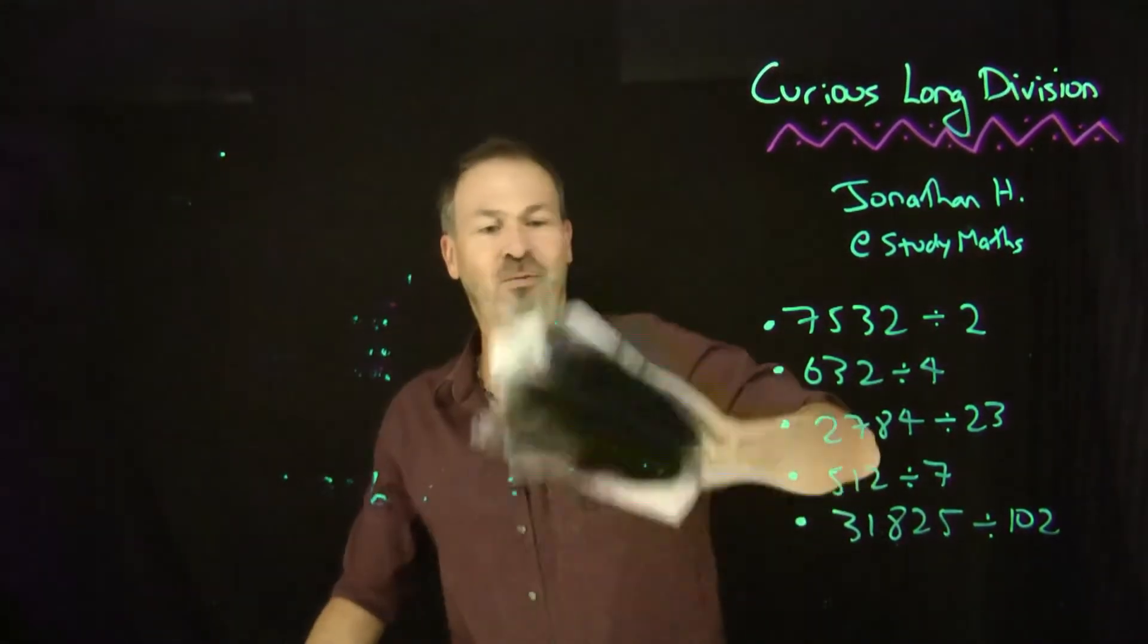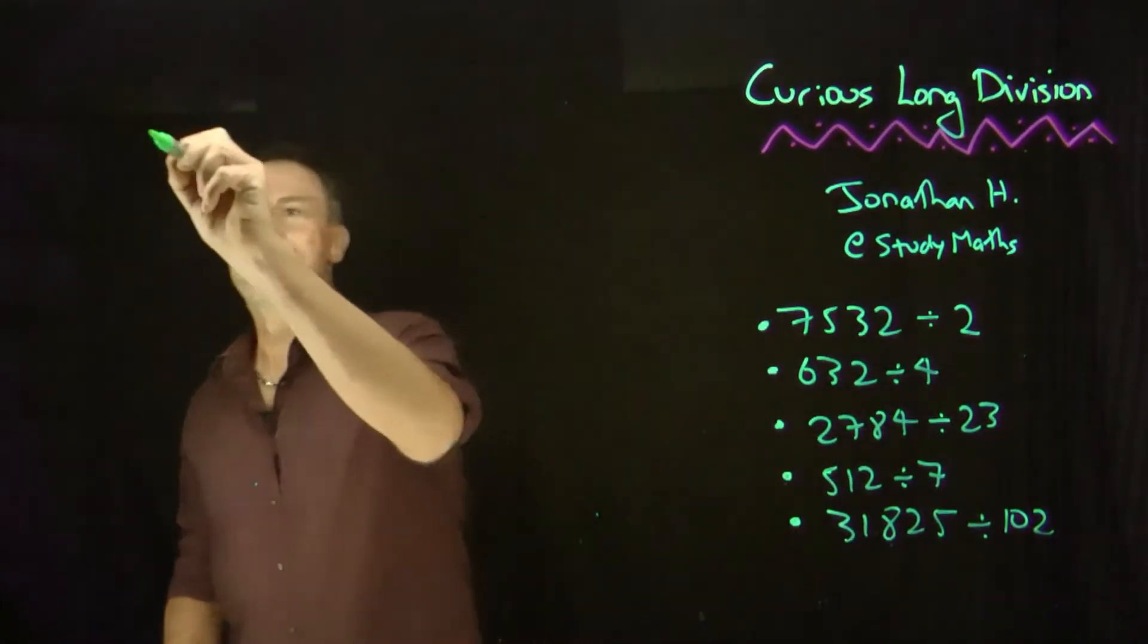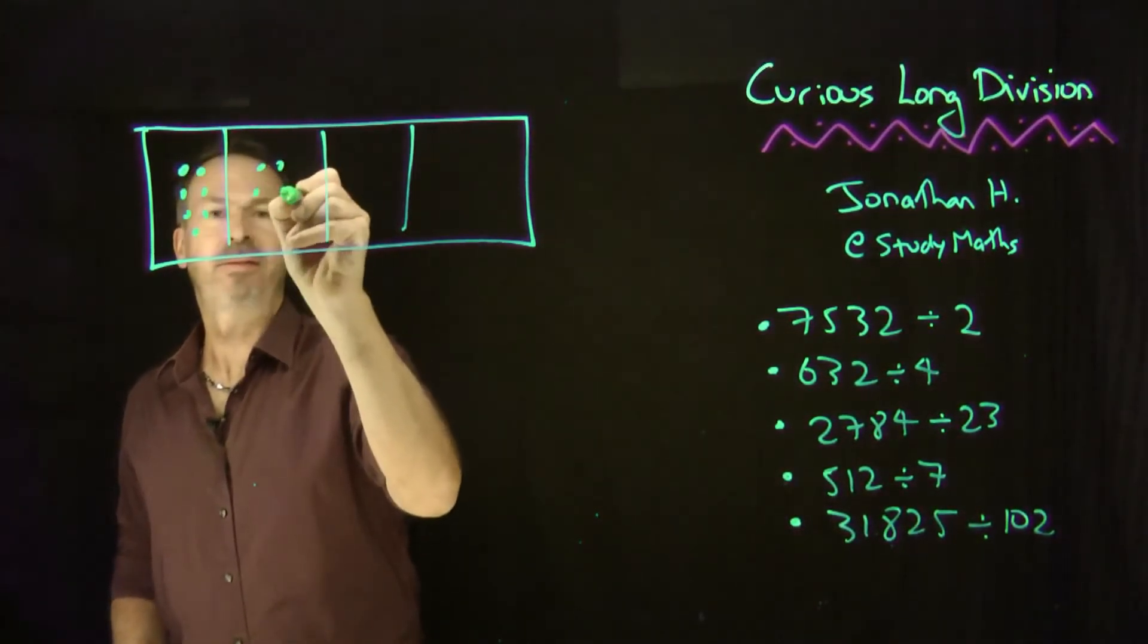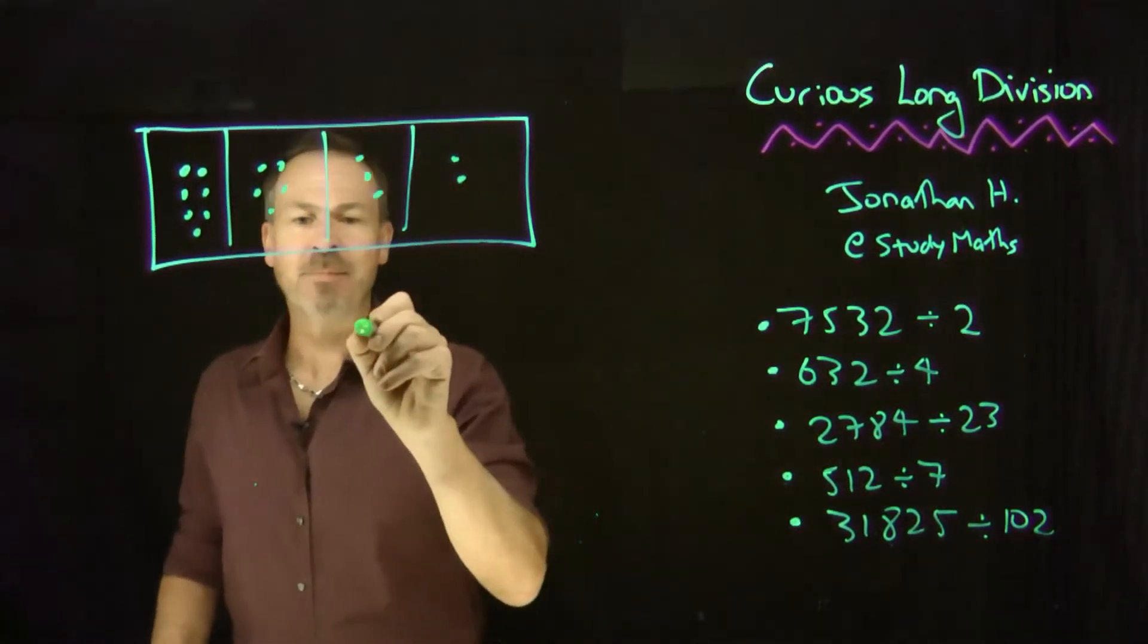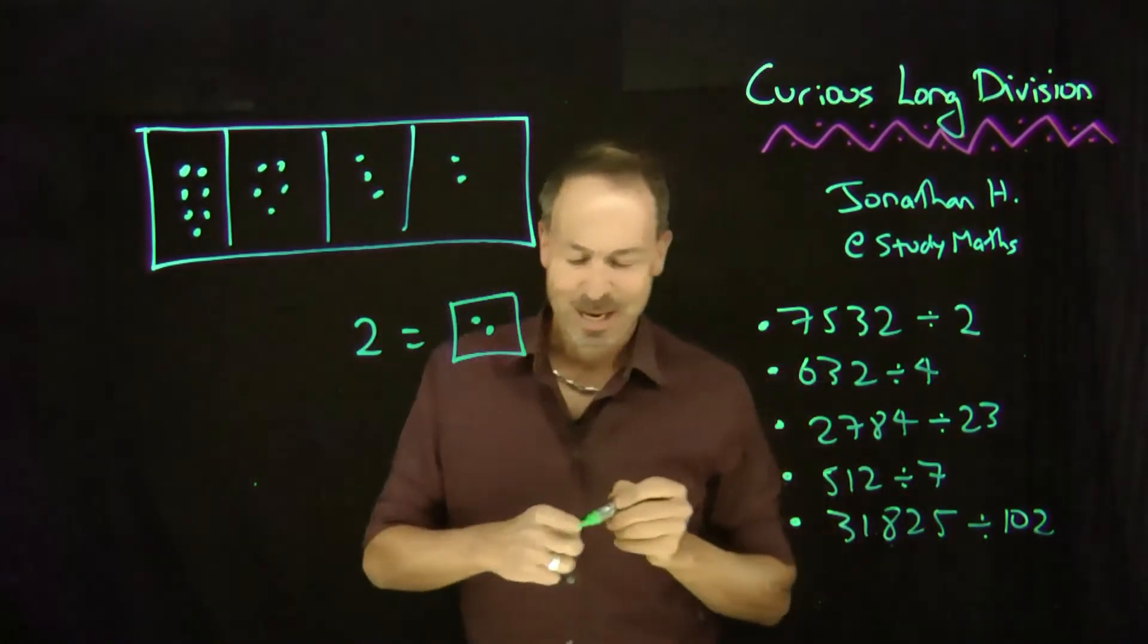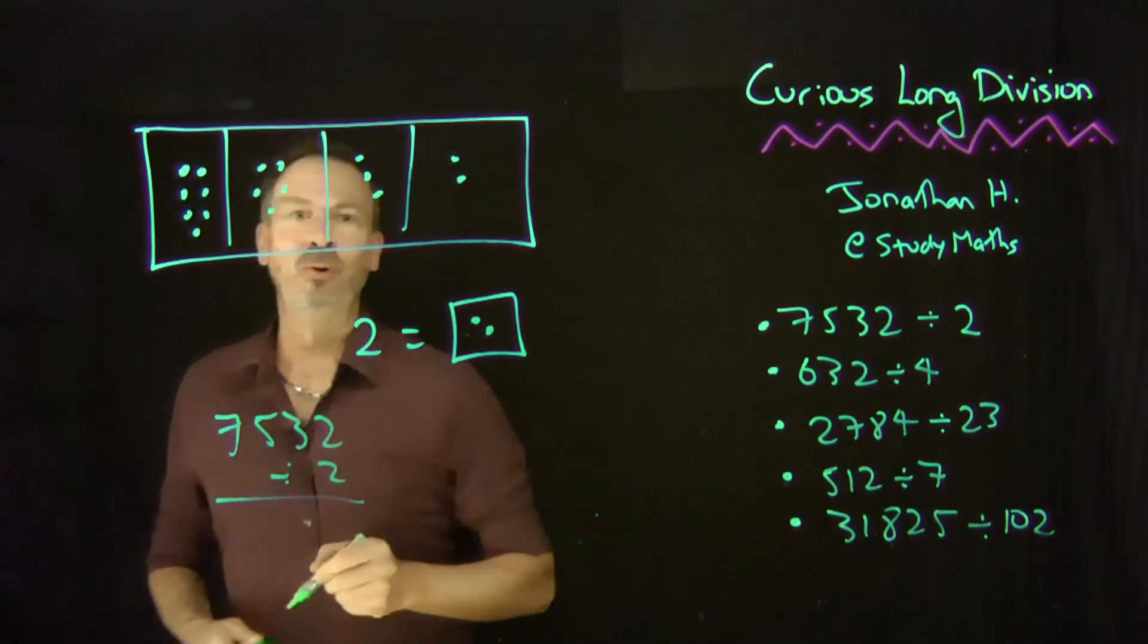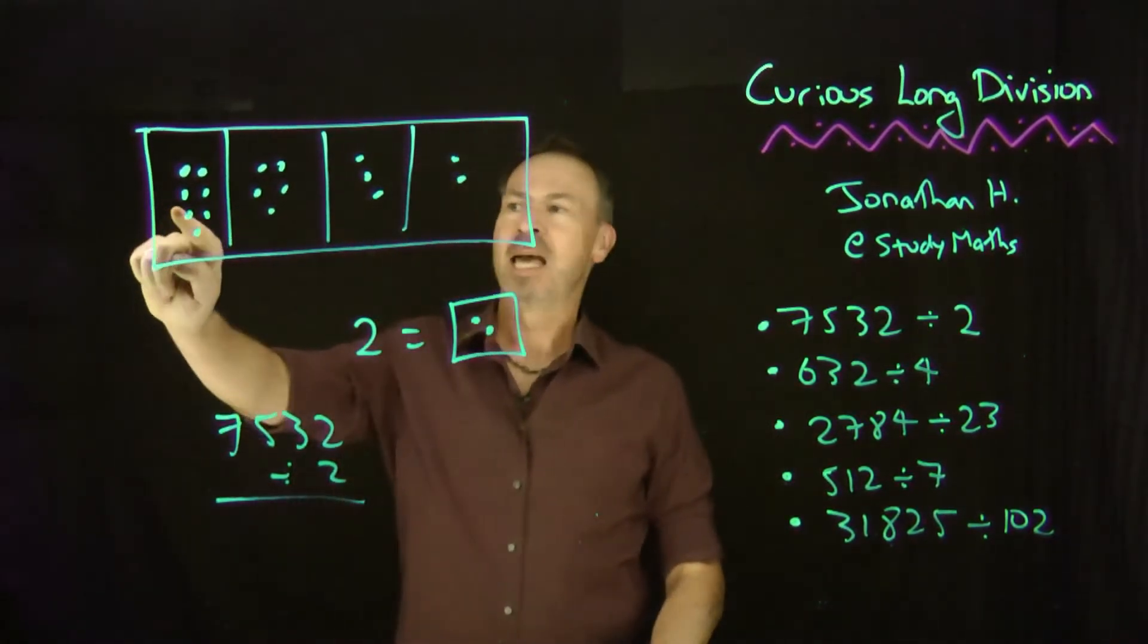Let me do it. Let's do the first one. 7532 divided by 2. So let me draw the dots and boxes picture of this. So what is it? 7532. So 7 here, 7000, 5 hundreds, 3 tens, and 2. And we're dividing by 2. So we're looking for groups of 2. Things that got doubled. So we're looking for pairs like that. Okay, and let's compare this to the curious long division algorithm. So I'll write that over here as well. We'll do the 2 together.